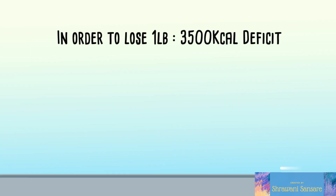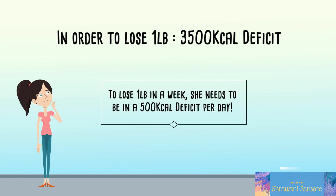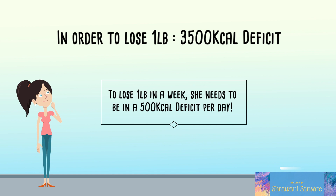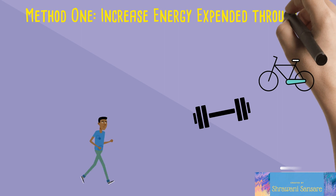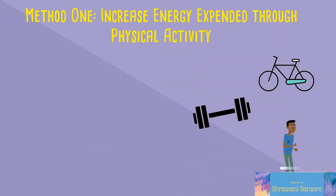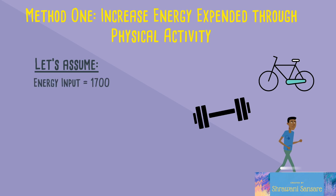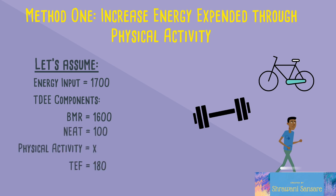To lose one pound (or half a kilo), you need to be in a deficit of 3,500 calories. Adding a time frame: to lose one pound every week, you need a deficit of 500 calories per day. The first method is to increase energy expended through physical activity while keeping everything else the same. For this example, let's assume I'm eating 1,700 calories per day, my BMR is 1,600, and I burn 100 calories through NEAT and 180 through the Thermic Effect of Food every day.